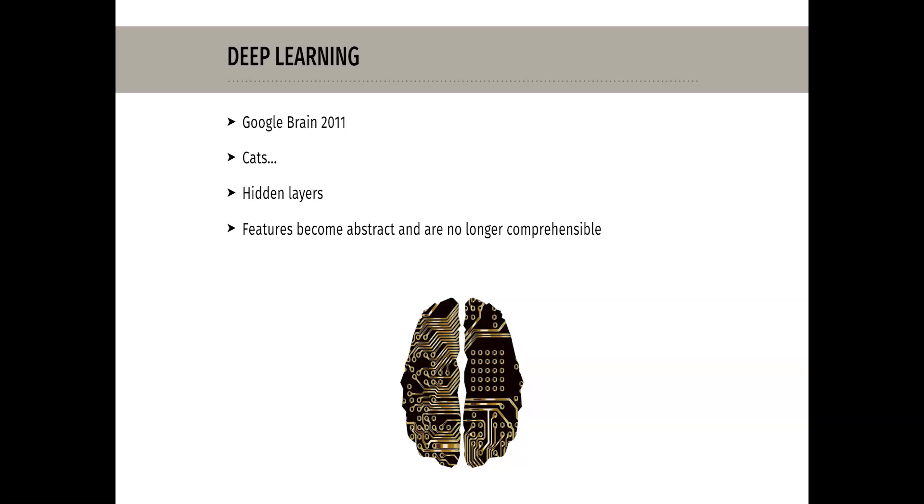Multi-layered deep learning networks abstract features in their deeper layers to such an extent that after such a network has been taught with training data, it is actually no longer possible to clarify what the classification function of the network ultimately looks like. Instead of developing complicated human-made algorithms, as in the early days of AI, these deep learning methods allow the machine to develop an algorithm itself.